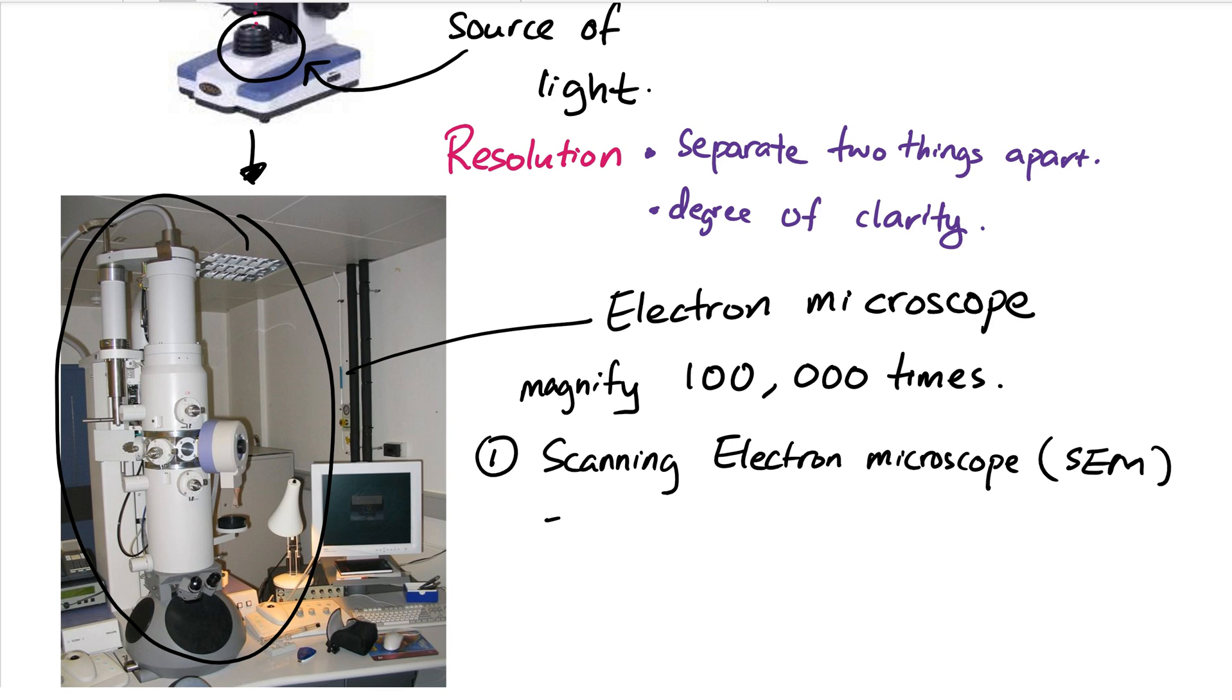The first one is what we call scanning electron microscope (SEM). It can scan the surface of the things that you're observing, so you can see the details of the surface area - the thing that you see outside of the structure.